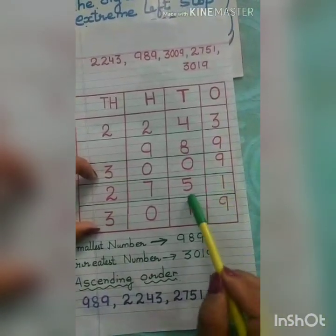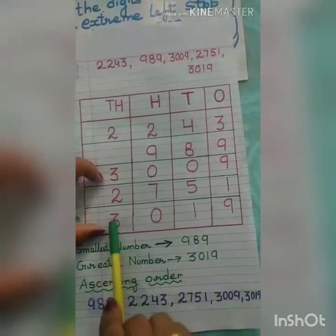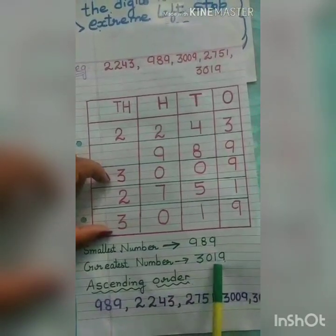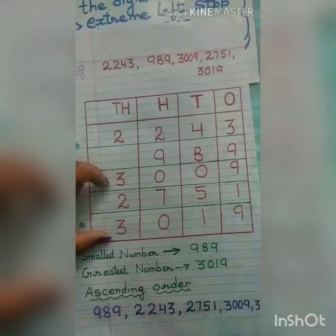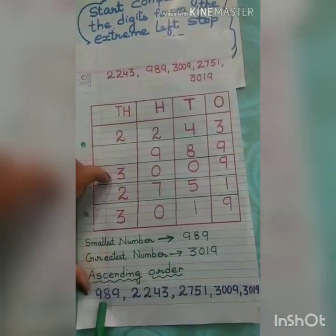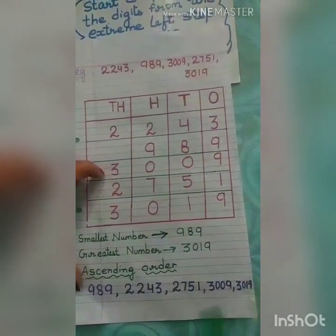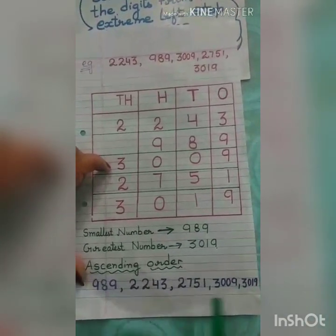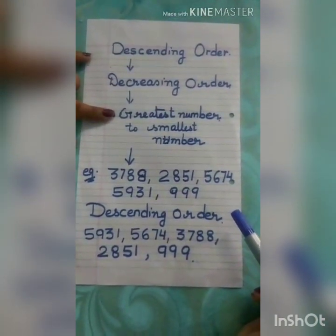The number with 1 at the tens place is greater. So 3,019 is greater compared to 3,009. Therefore, we have the ascending order of numbers — from the smallest number to the greatest number, written in increasing order.